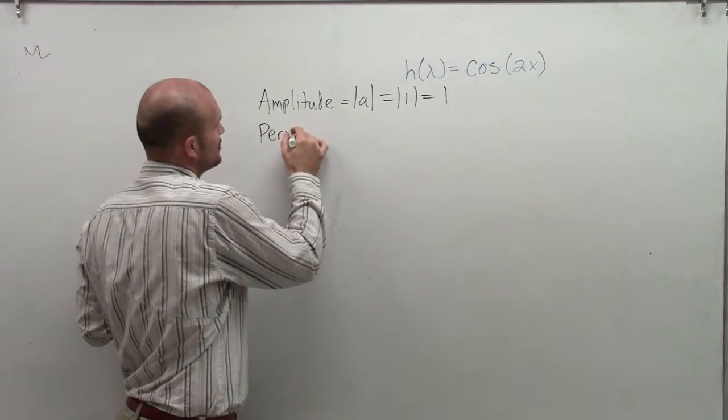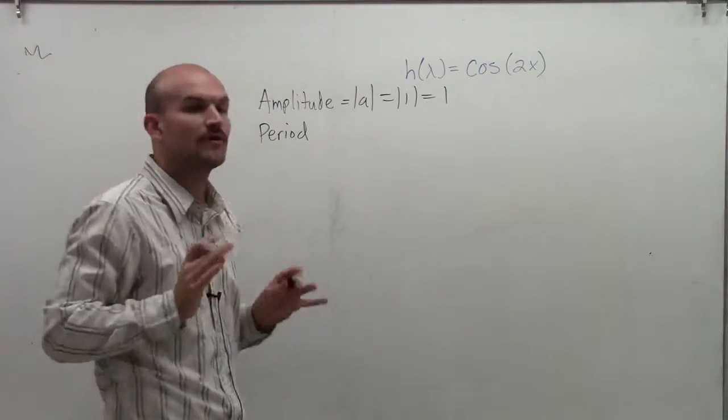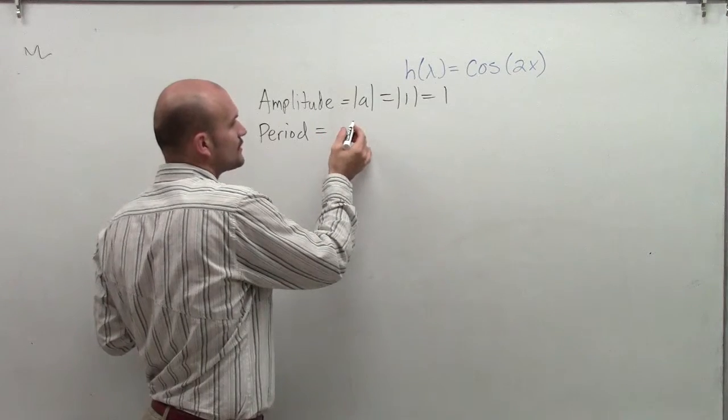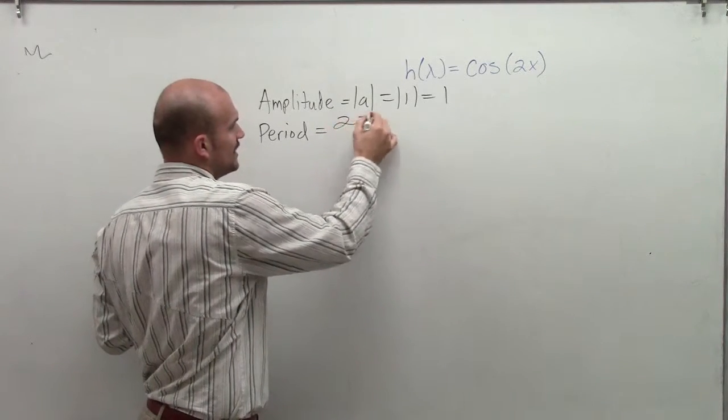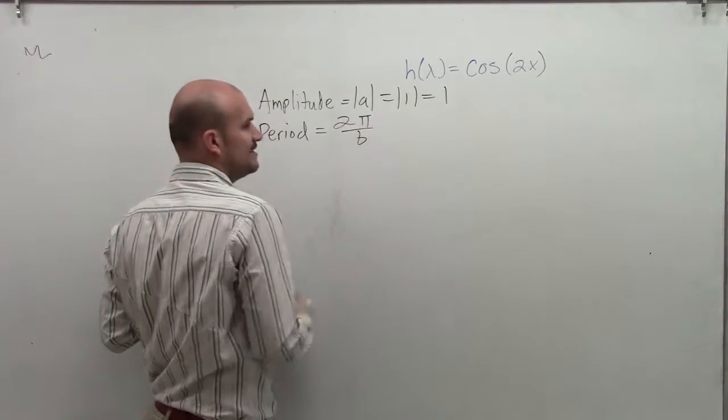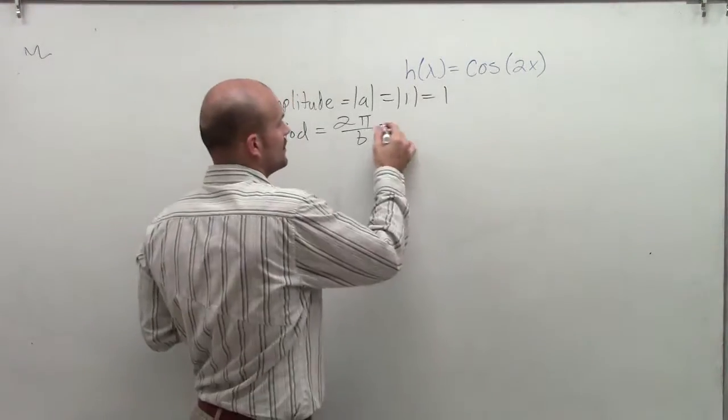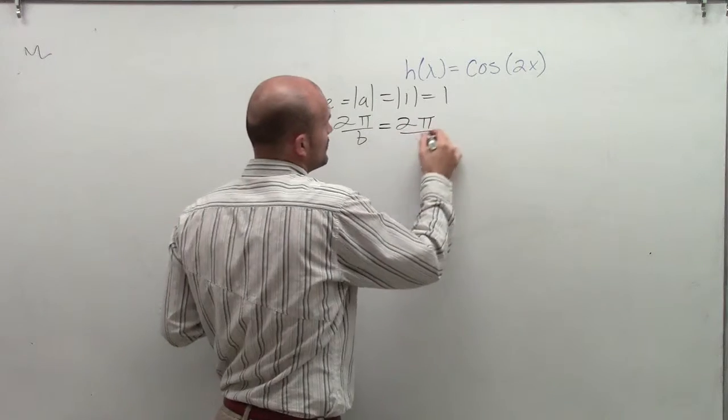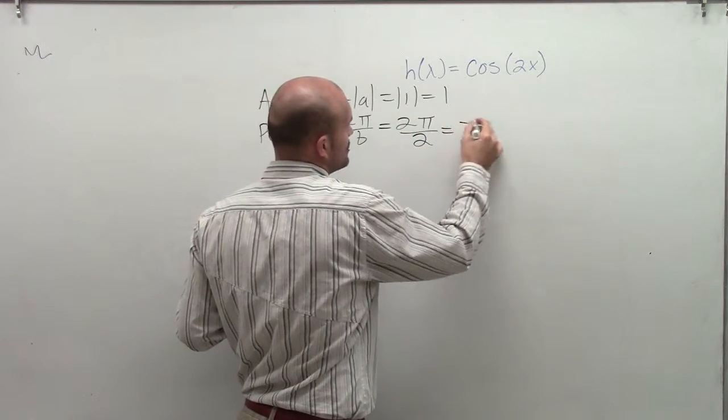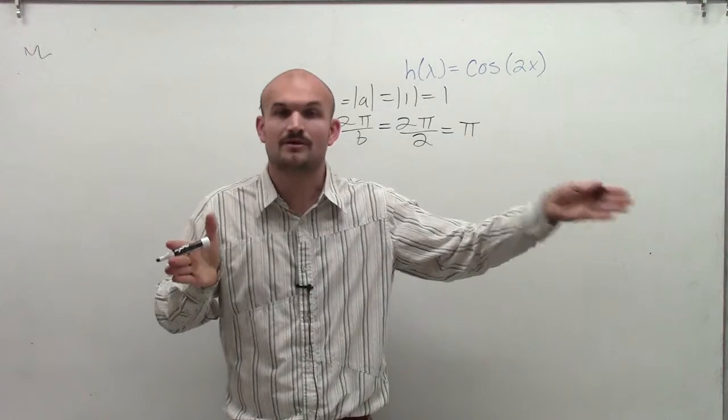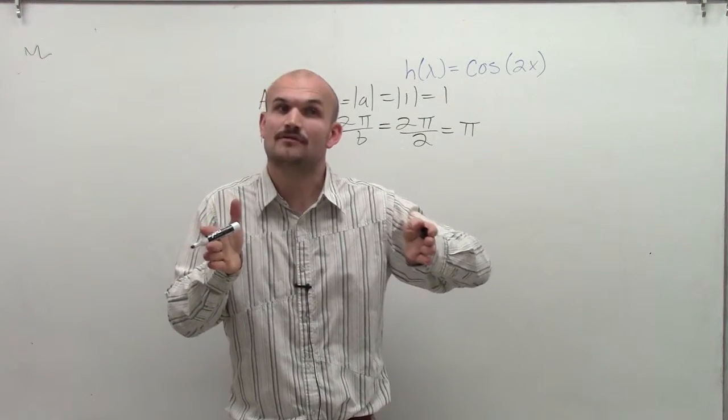The period is the distance that it's going to take for our graph to complete one complete cycle. The rule for period is take 2π and divide it by b, where b is your coefficient of x. In this case, we have 2π divided by 2 equals π. So rather than my graph taking 2π to complete a cycle, it's now going to take a distance of π.